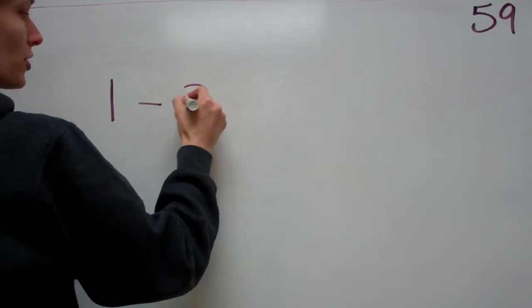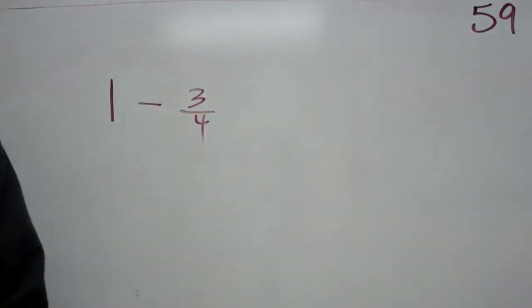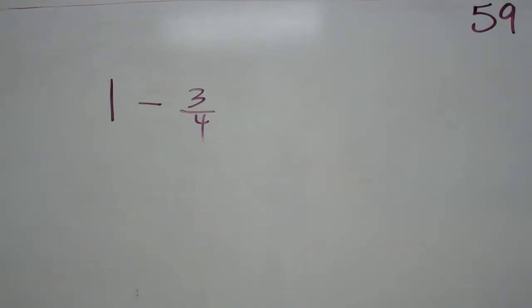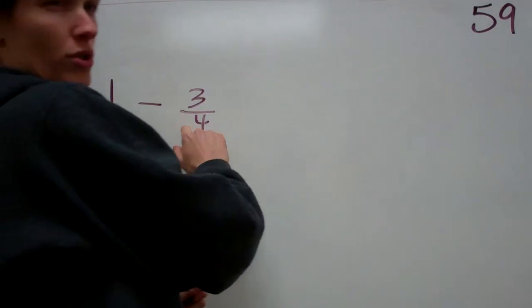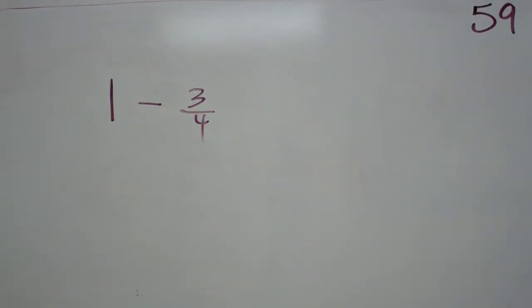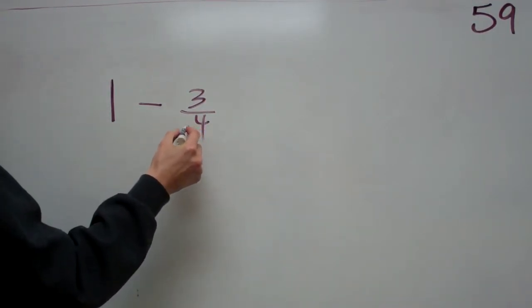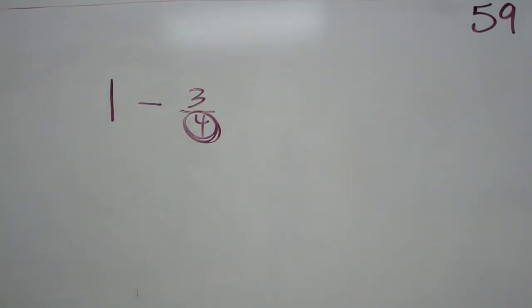One minus three-fourths. Tell me what the answer is. One minus three-fourths. What you should have done is my one whole... What do I know from my fraction... How many pieces it was cut into? Fourths. It was cut into fours.